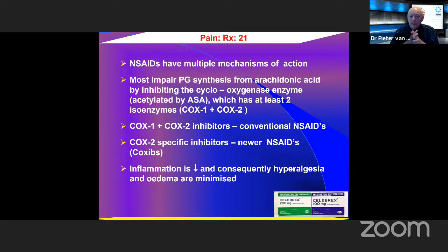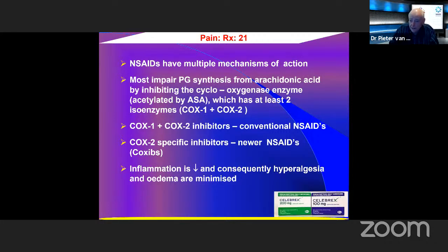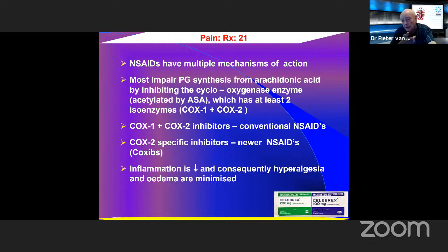Non-steroidals have multiple mechanisms of action. Most impair prostaglandin synthesis from arachidonic acid by inhibiting the cyclooxygenase enzyme, which is acetylated by aspirin. This enzyme has two isoforms: COX-1 and COX-2. Conventional non-steroidals such as diclofenac and ibuprofen inhibit both COX-1 and COX-2. In more recent years, COX-2-specific inhibitors have become available — the newer NSAIDs, also known as coxibs.